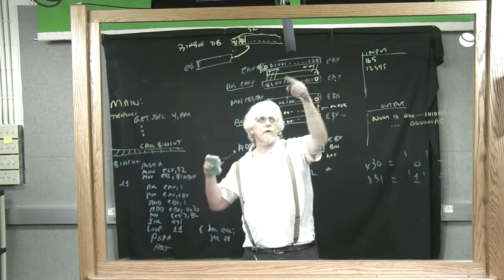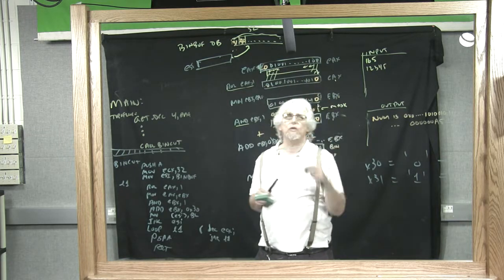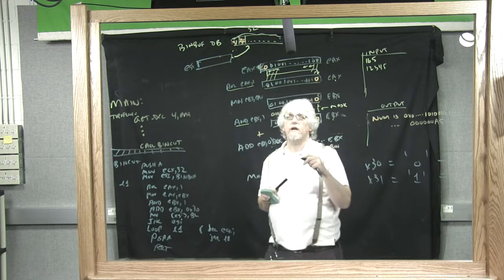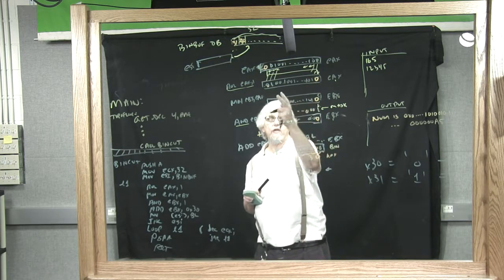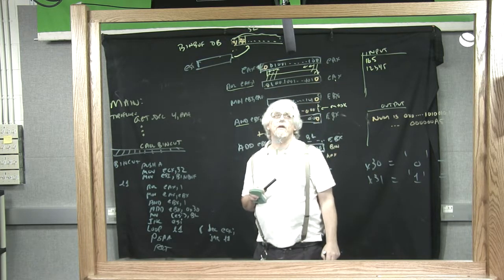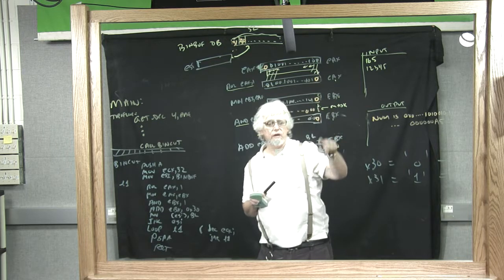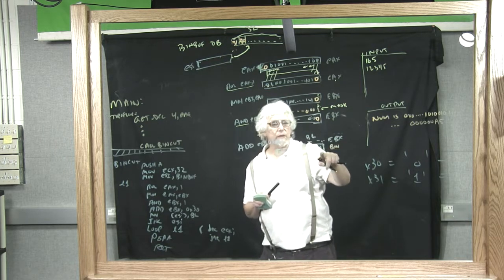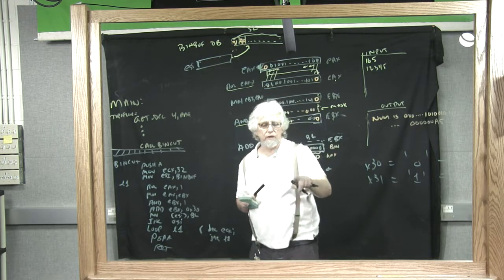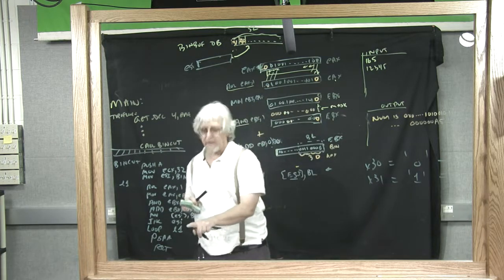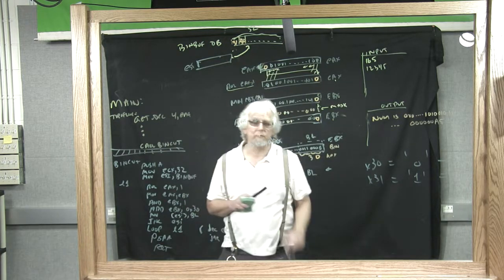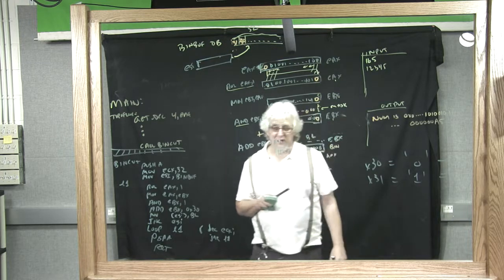Again, we're going to rotate it. I won't bother drawing it out for you, but you get the idea. Every time we rotate EAX and we get another bit over here, we convert it to a character, mask it, convert it to a character, put it into memory, increment ESI, move over. That will get us all 32 bits.